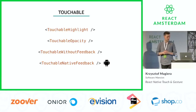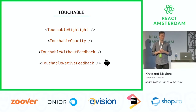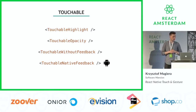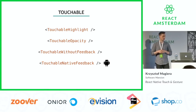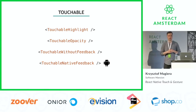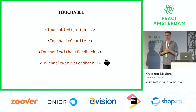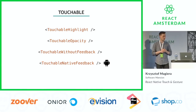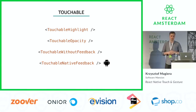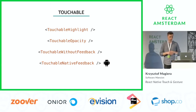We start off with basic touchable components. In React Native we have four main types of touchables. They differ by the way they display feedback, but have a common interface for handling touch events. The main element of that interface is the on-press handler that fires whenever the user presses the button, and we can use that to run some logic based on that.